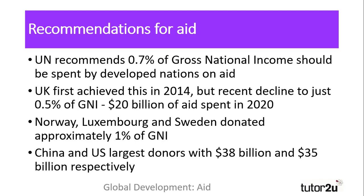As a percentage, the UK may be less generous than nations such as Norway, Luxembourg and Sweden, who top aid contributions with around 1% of their gross national income. However, it ranks alongside larger nations such as China, who donate $38 billion, and the US, who donate $35 billion in aid each year.